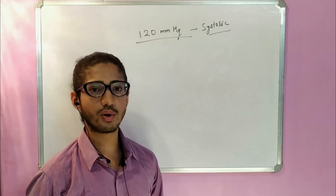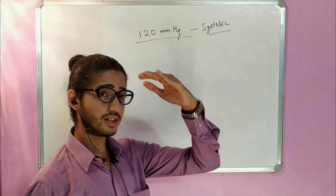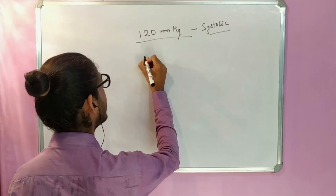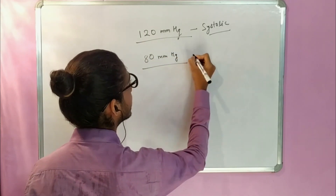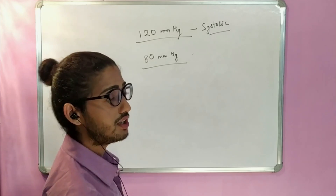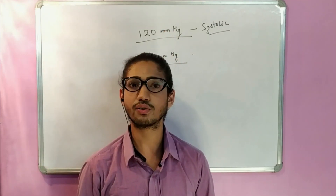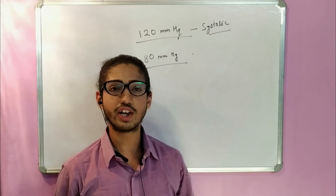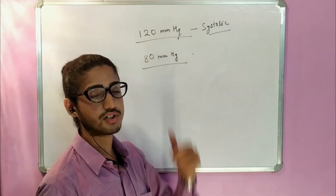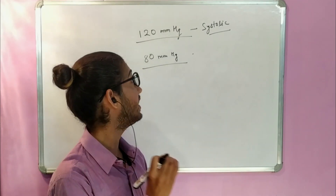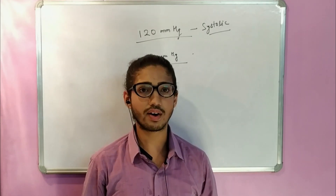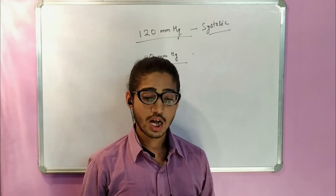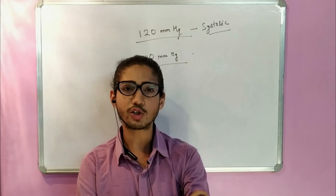Immediately after systole follows diastole — the relaxation phase. During relaxation, the pressure drops, and the lower limit of that pressure is called diastolic pressure, which is about 80 mmHg. So 120 mmHg as the higher limit and 80 mmHg as the lower limit together represent the normal blood pressure of a human body. It's a range — 120/80 is the standard, but plus or minus five is still within normal range.